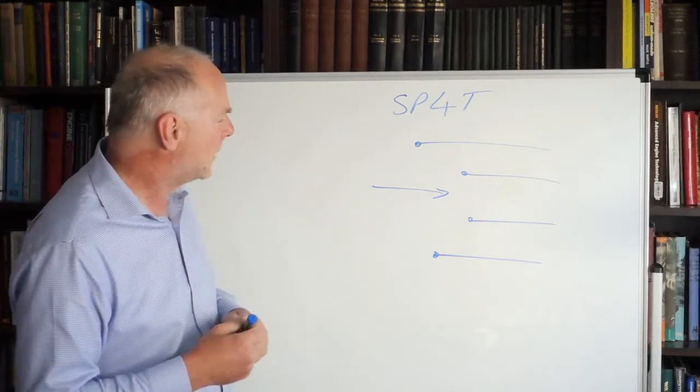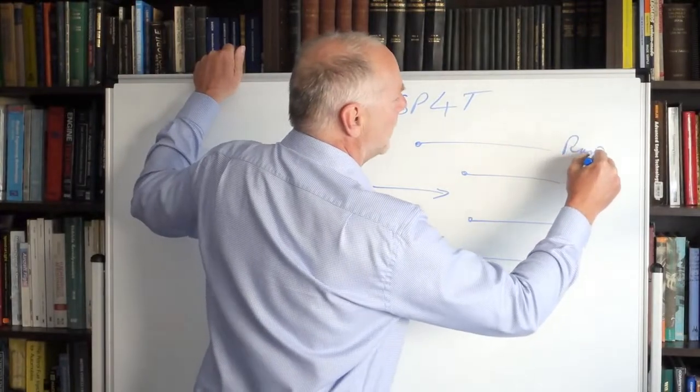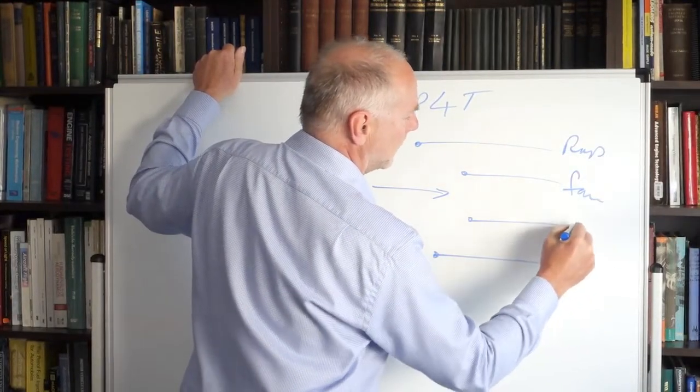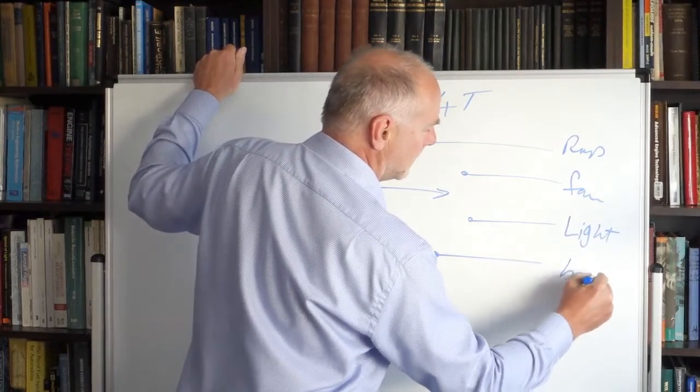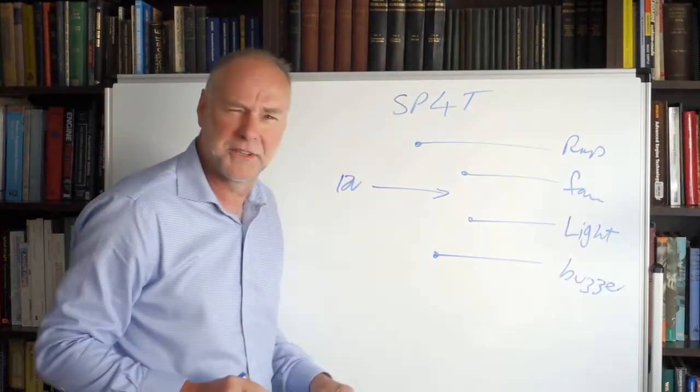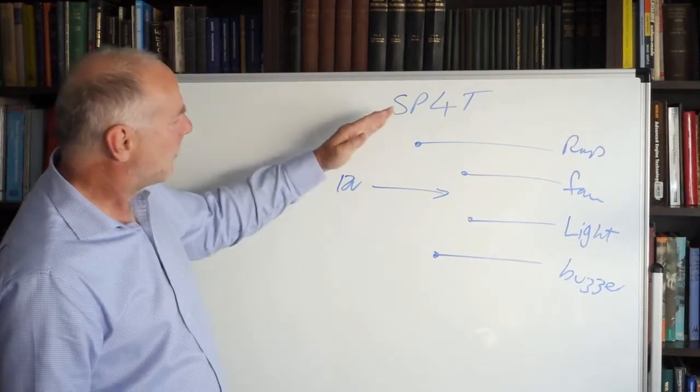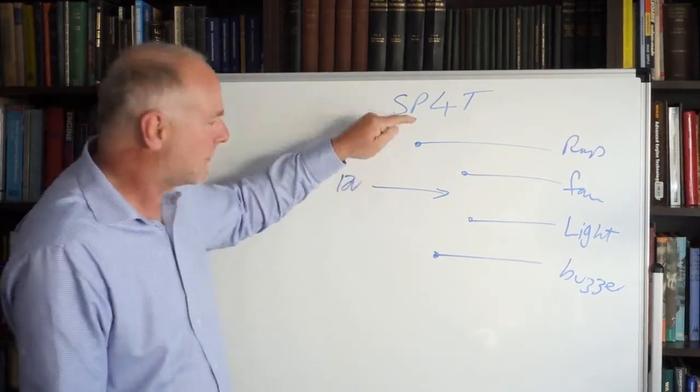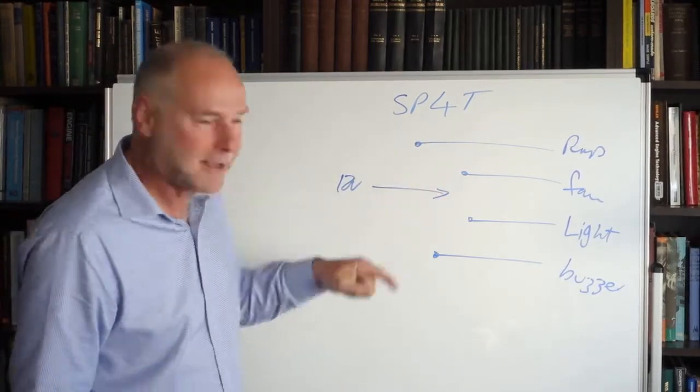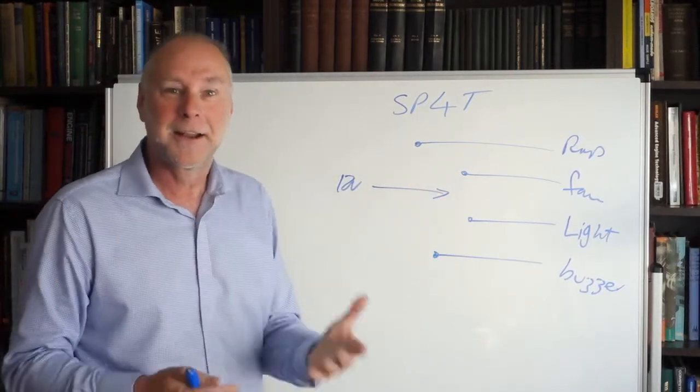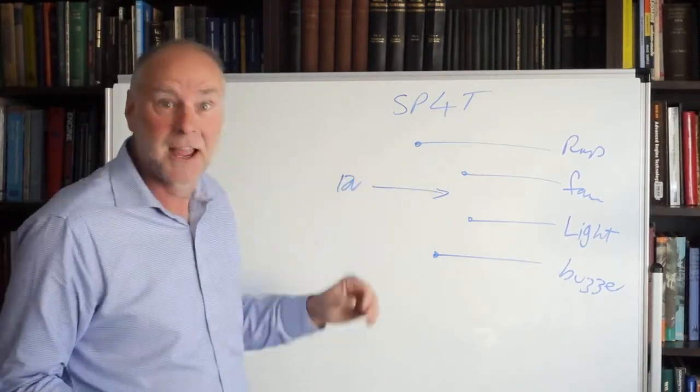Now, what might they be? Well, if we put 12 volts there and if we put a pump there and we put a fan there and we put a light there and we put a buzzer there. And if you're thinking why on earth would you do all this? I don't know. I'm just using it as an example. Well, when we switch the switch to there, the pump runs. When we switch it to the next position, the fan runs. And when we switch to the next position, the light and then the buzzer. So we can operate four different outputs with the one rotary switch and with the one input.